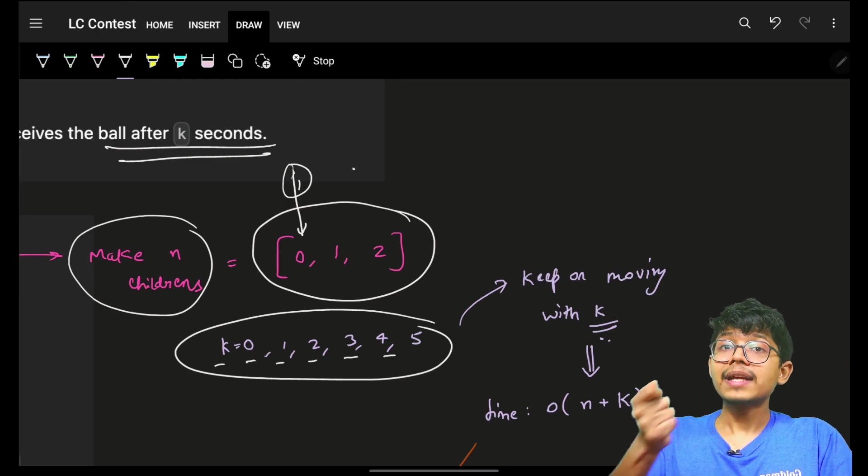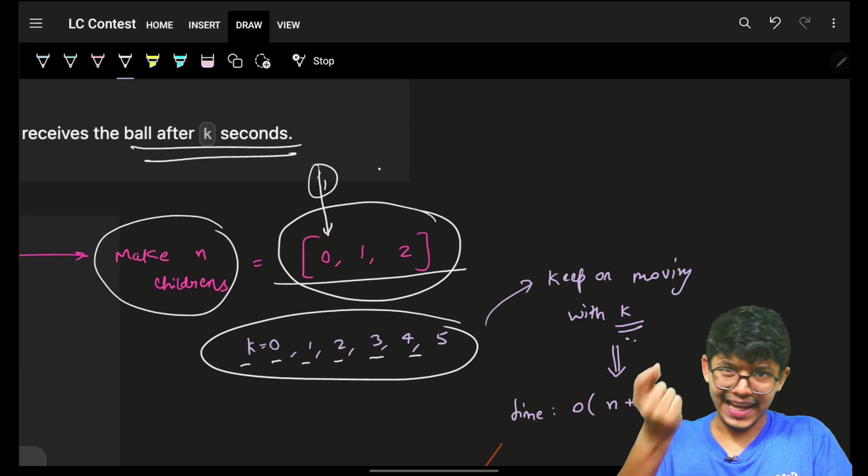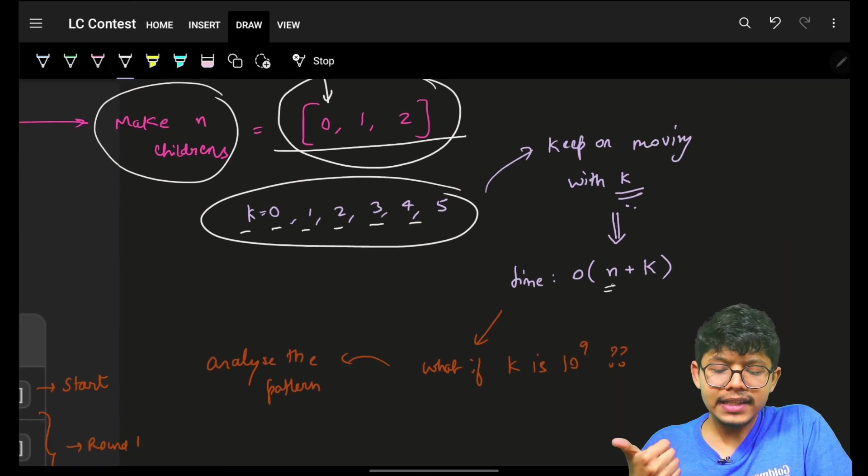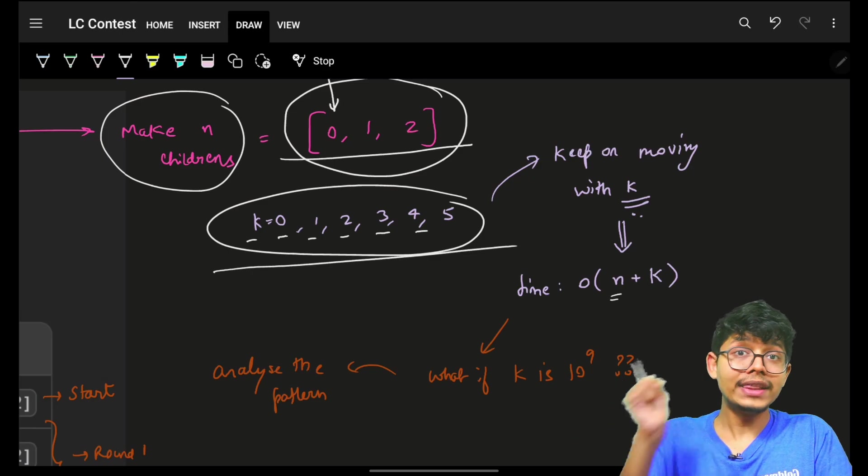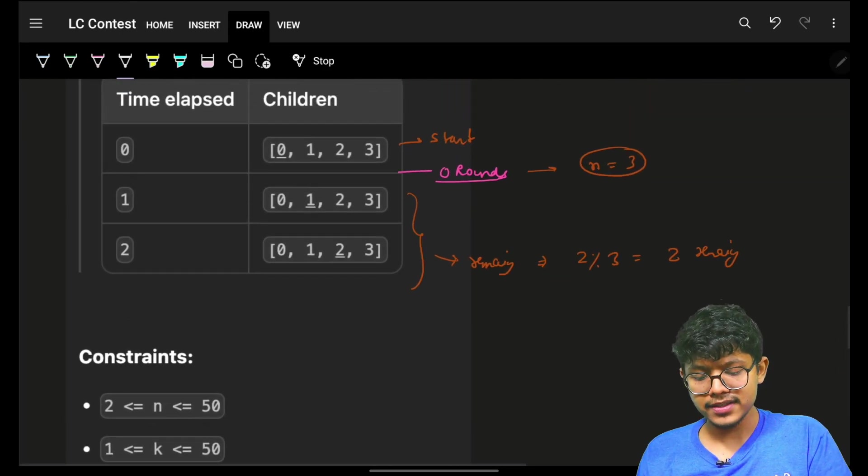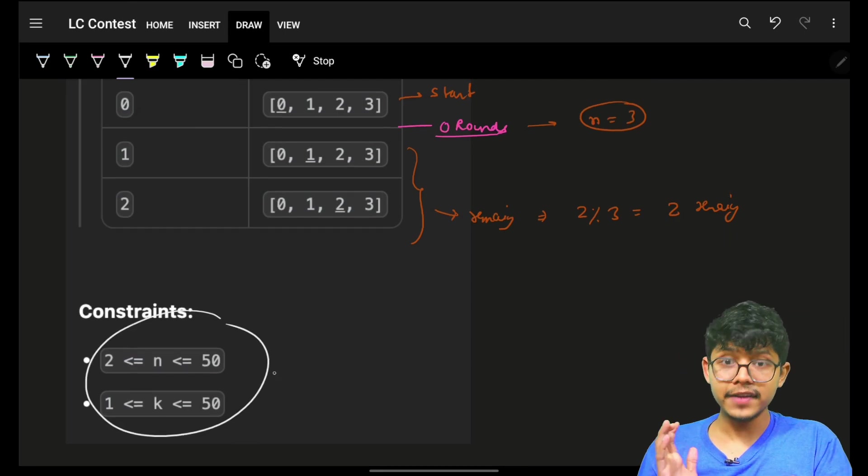Now, for this complexity, as you have to build this entire array, for sure, O of n will be required. And then, you have to go and try for all the k's, which means k. For this, the complexity of O of n plus k will easily work, because k is very small.